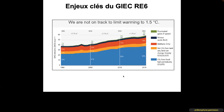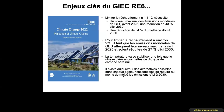This graphic simply shows that we are not on the right track to limit warming to 1.5°C. It is therefore important that countries and institutions commit toward net zero to balance emitted and extracted greenhouse gases. Limiting warming to 1.5°C requires global emissions to peak before 2025, a 43% reduction by 2030, and a 34% reduction in methane by 2030. To limit warming to approximately 2°C, global emissions must peak before 2025 and be reduced by 25% by 2030.